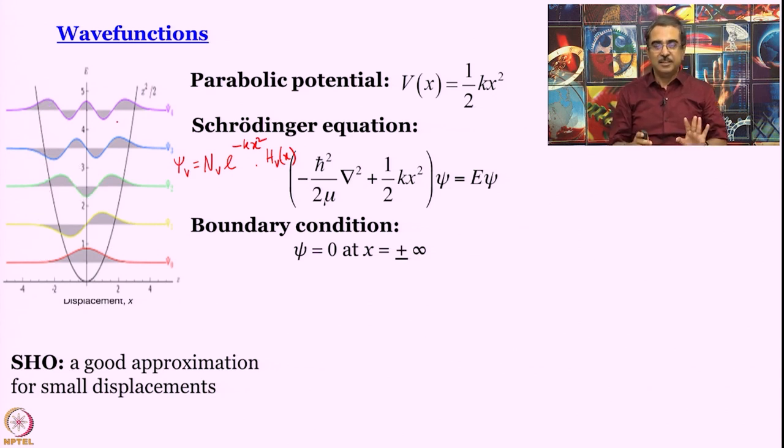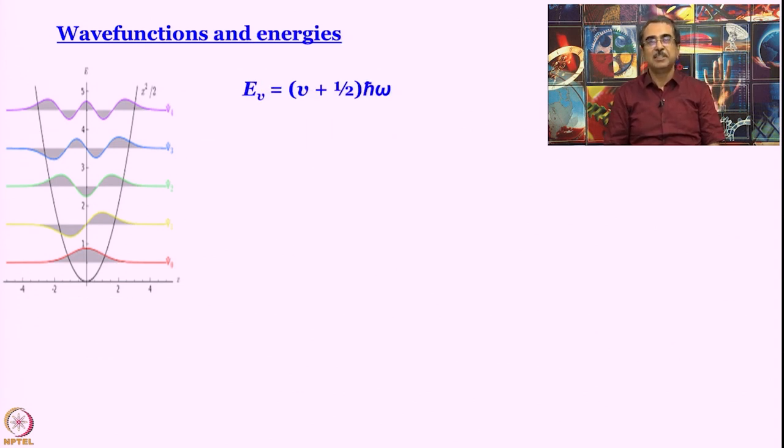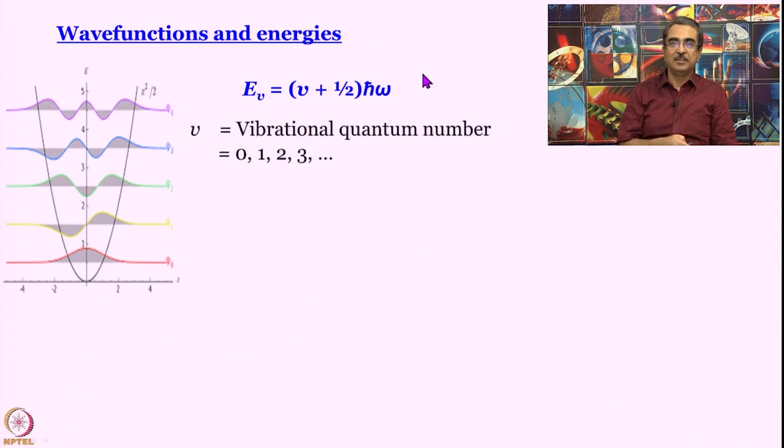This is the quantum mechanical description of simple harmonic oscillator. Quantization is there, wave functions are there. The only thing that remains to be told at this point is what is the expression for the energies? This is the expression for energies: E_v = (v + ½)ℏω, where ℏ is h/2π, ω is the angular frequency of vibration, v is the vibrational quantum number going from 0, 1, 2, 3, and so on. Now we have an interesting situation: if you put v = 0, what is E_v going to be? It will not be zero; it is going to be ½ℏω.